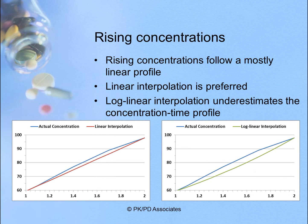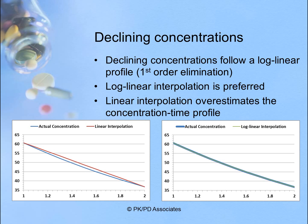When we look at rising concentrations, they actually mostly follow a somewhat linear profile. So linear interpolation is preferred, as shown on the left, where there is a slight underestimation of the concentrations. It's worse if you use log-linear interpolation when concentrations are rising. When concentrations are declining, as already shown, they generally follow a log-linear profile and log-linear interpolation is performed. Linear interpolation will overestimate your AUC for those declining concentrations.